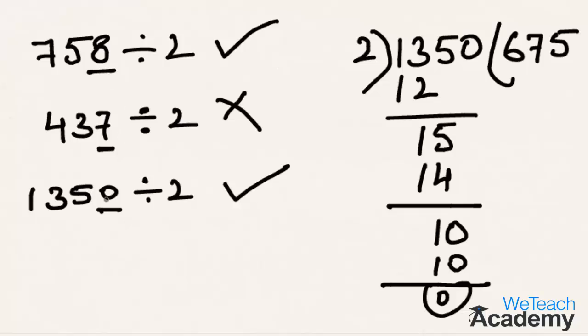So if a number is exactly divisible by 2, it must end with an even number or a 0. This was the presentation on the divisibility test for number 2. Hope you like the presentation. Do like and subscribe to vteachacademy.com. Thanks for watching, have a nice day.